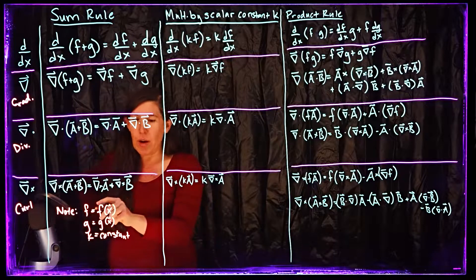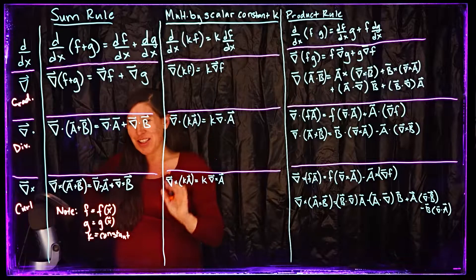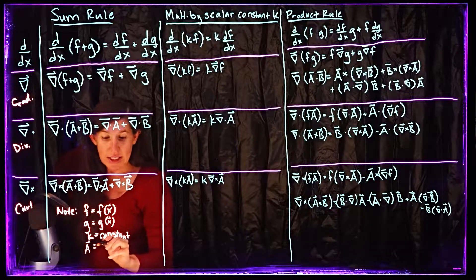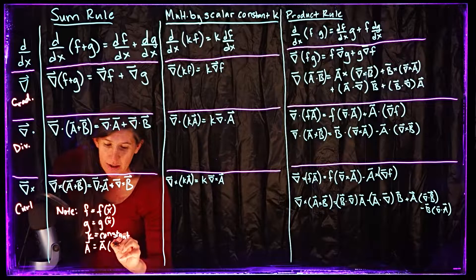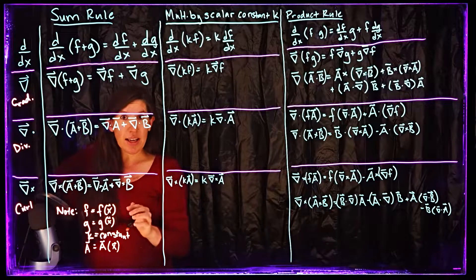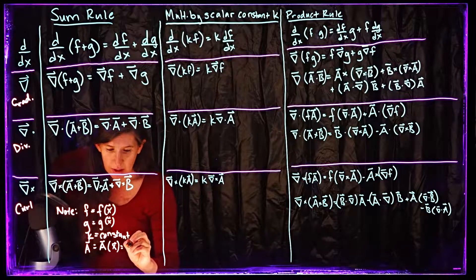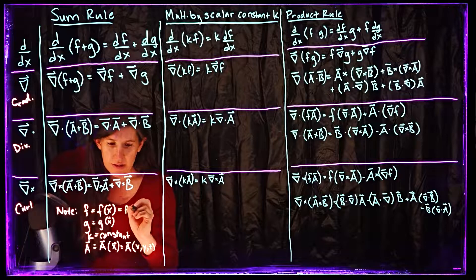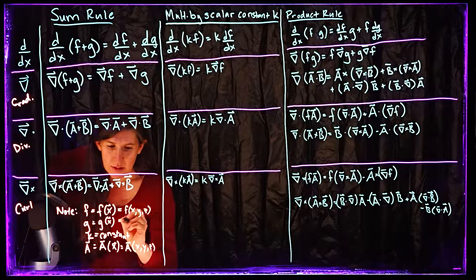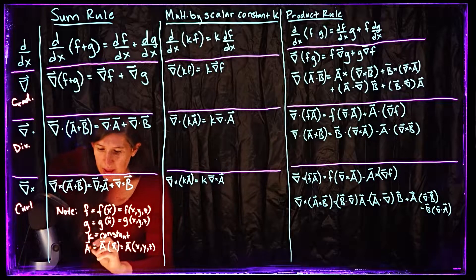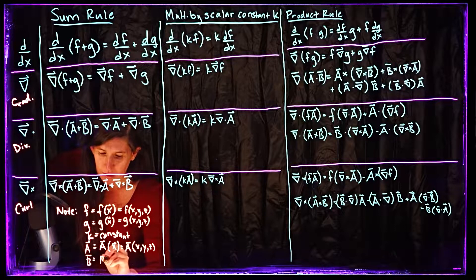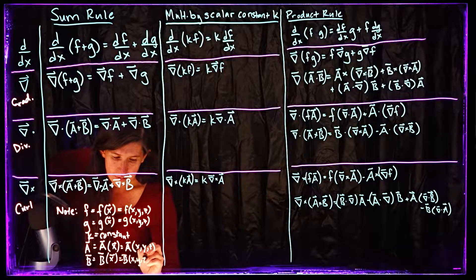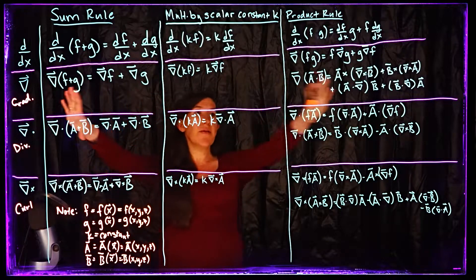My convention is that f is a function of x, y, and z. G is also a function of x, y, and z. K is a constant — it's not a function of x, y, or z. A is also a vector and it's a vector which is a function of x, y, and z. B is also just a vector which is a function of all of our coordinates. So these are the conventions for everything shown above.